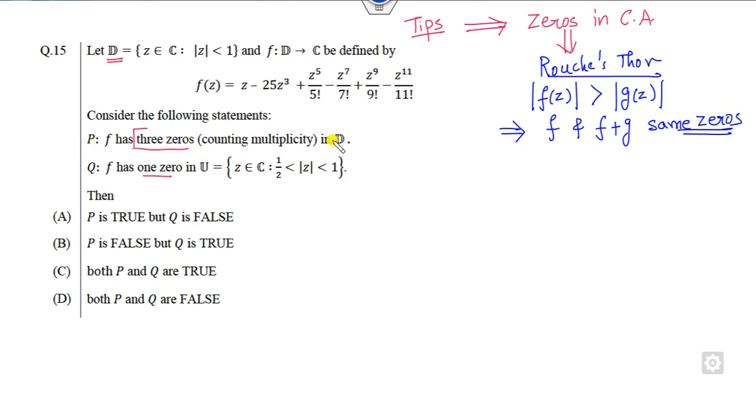So, the first part is F has three zeros in D. What is D? This is my D, mod of Z is one. How you can find that? F has three zeros. If I simply consider this as my F, which is a polynomial of degree three, this is my G. Then, what is the mod of F over the domain? I can rewrite this number as one plus twenty-five. Why? Because what is the mod of F? Mod of Z plus twenty-five. This number is less than one, so that's twenty-six.